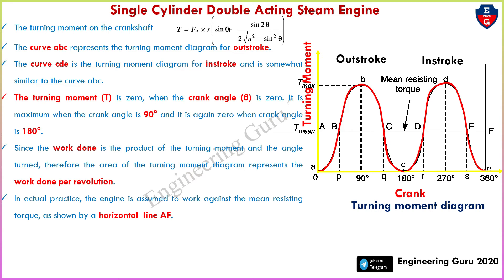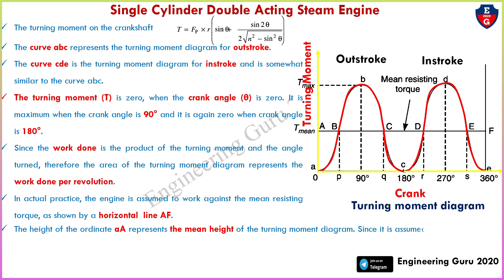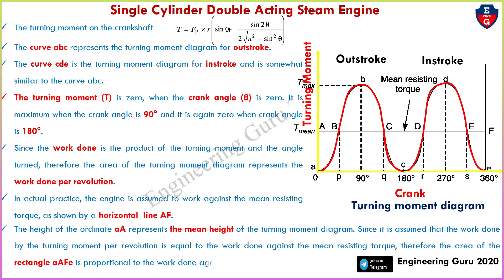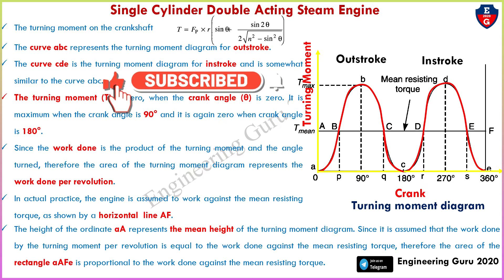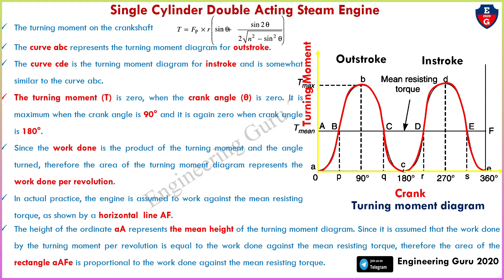The excess energy is stored in the flywheel at points D, d, and E. The height from small a to capital A represents the mean height of the turning moment diagram. It is assumed that the work done by the turning moment per revolution equals the work done against the mean resistance torque. Therefore, the area of rectangle A-F-E is proportional to the work done against the mean resistance torque.